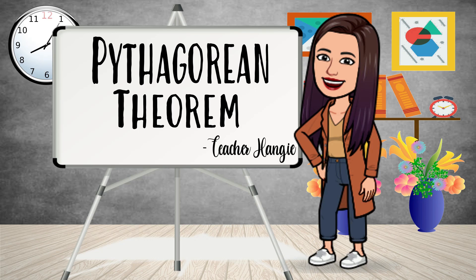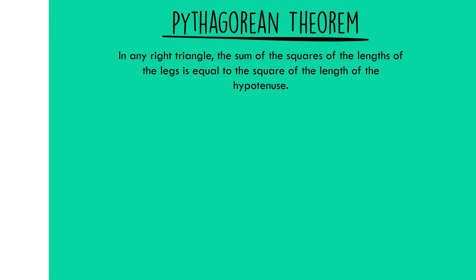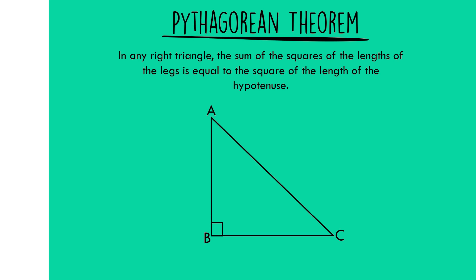Let us have the condition under the Pythagorean theorem. In this theorem, it states that in any right triangle, the sum of the squares of the legs is equal to the square of the length of the hypotenuse. Remember that the legs are the sides in which the right angles are included.